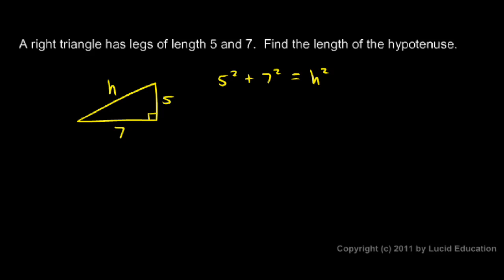And these squares we can do in our head. Five squared is 25. Seven squared is 49. So 25 plus 49 is h squared. Now we add 25 and 49, we get 74. h squared is 74. That means h is equal to the square root of 74.